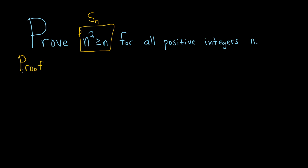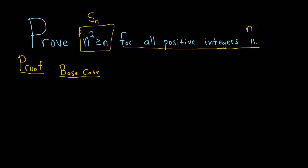I like to do my induction proofs in three steps. The first step is called the base step or the base case. In this step, you basically show it's true for your starting point — the smallest positive integer you're working with. Here it says for all positive integers, so n is greater than or equal to 1, meaning we start at 1. If n equals 1, on the left-hand side we have 1 squared, which equals 1. So 1 squared is greater than or equal to 1, which is exactly our statement. This means s sub 1 is true.